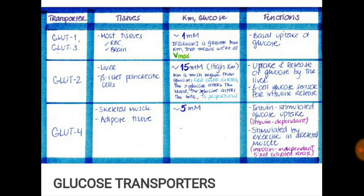Now glucose transporters. GLUT 1 and GLUT 3 are present in most tissues including RBC and brain. GLUT 2 is present in liver and pancreatic beta cells. GLUT 4 is present in skeletal muscle and adipose tissue. GLUT 4 is very important because it is insulin-dependent.